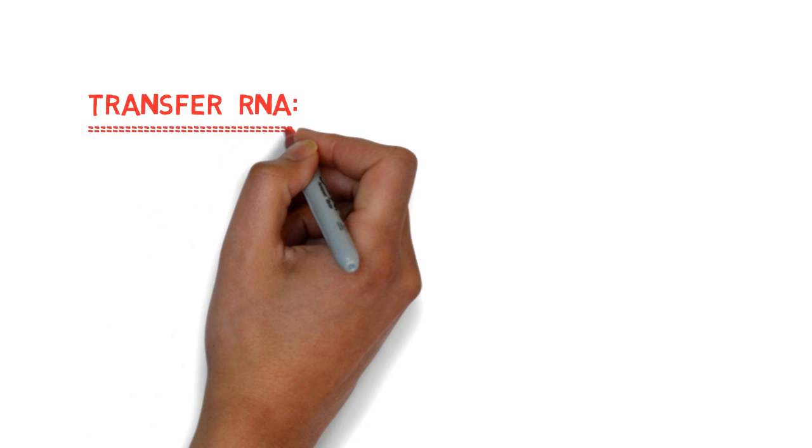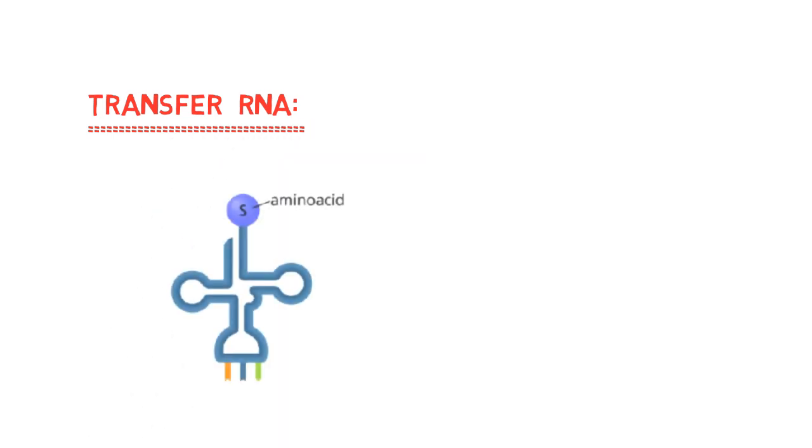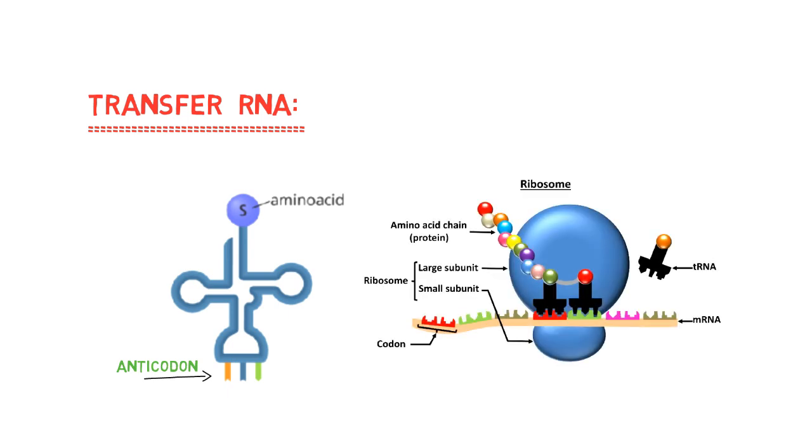The last one is transfer RNA, which has a T-shape and is mainly involved in translation steps. It has an anticodon at its end, which is specific to a particular amino acid. It brings amino acids corresponding to each codon during protein synthesis.